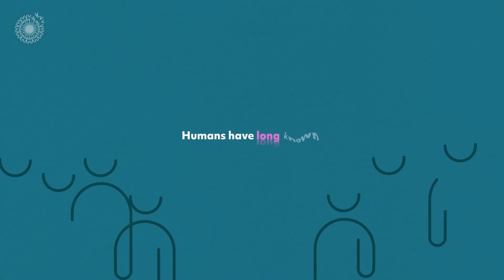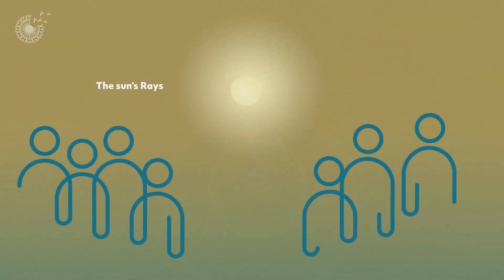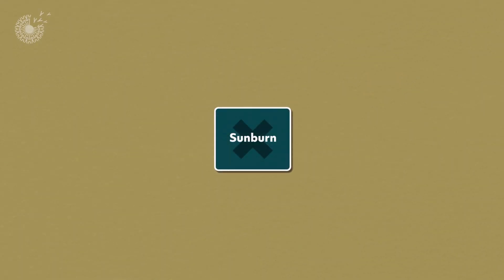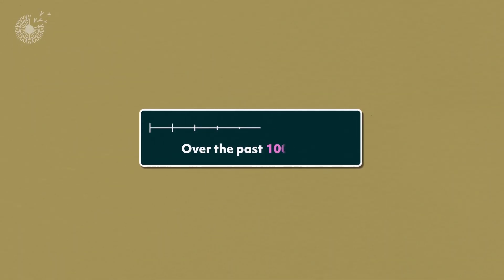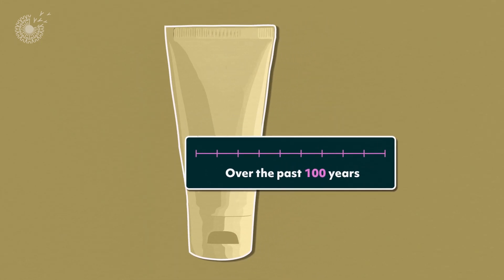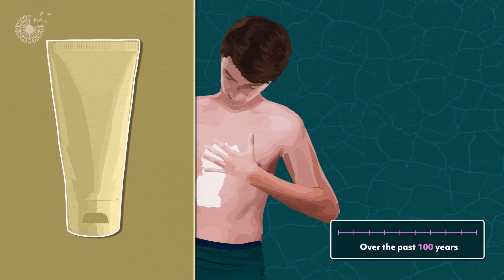Humans of all cultures have long known the sun's rays can damage your skin. To prevent sunburn, we've used many techniques. But over the past hundred years, one method has grown worldwide: slather on tons of sunscreen.